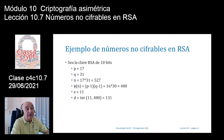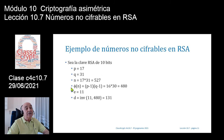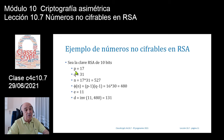Tenemos esta clave muy pequeña para que se pueda ver de forma bastante clara. P igual a 17, Q igual a 31, el producto de ambos primos me da 527, el grupo de cifras. Fi de N, el indicador de Euler, sería P menos 1 por Q menos 1, 16 por 30, que me sale 480.